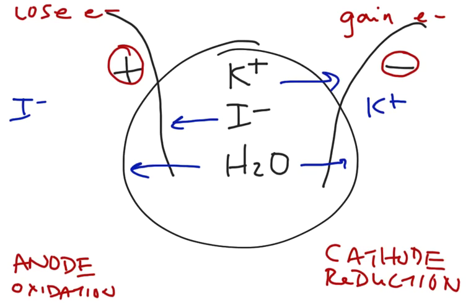So we have an anode and a cathode. Now, either the potassium is going to change or the water is going to change. Either the iodide is going to change or the water is going to change. We need to look at this for reduction, or look at water for reduction, and we're going to do that with our reduction table.